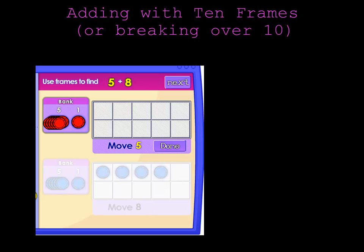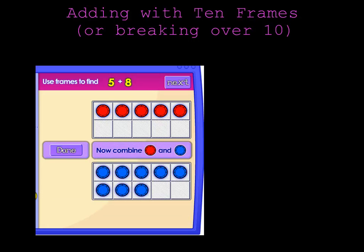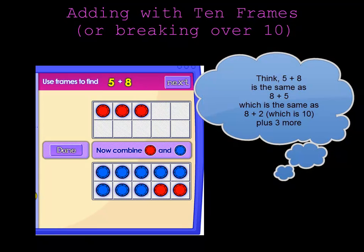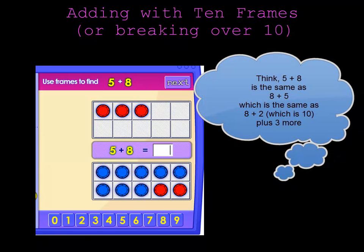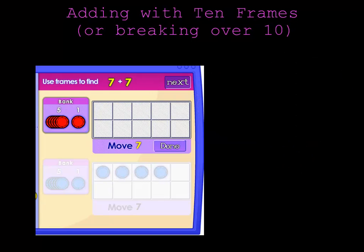This time I'll do 5 plus 8, so 5 chips in the top 10 frame and 8 chips in the bottom 10 frame. Notice I can make 8 by just taking 2 away from 10. This time I will move 2 chips down to the 8 because it's easier to make a group of 10 with 8. There's fewer chips to move. 8 plus 5 is 13.